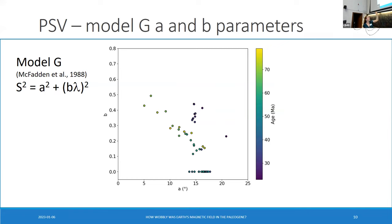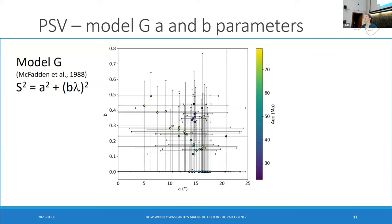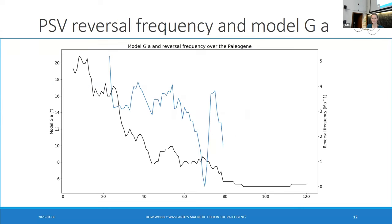So these are the Model G-A and B parameters for that whole time period. And what we do observe is an anticorrelation. So when Model G-A is high, Model G-B is low. So what that's saying is that if we have high paleosecular variation at the equator, it tends to be compensated by a lower B. But, and this is a big but, look at the error bars. So yes, take any conclusions to that with a lot of caution.